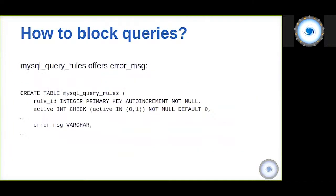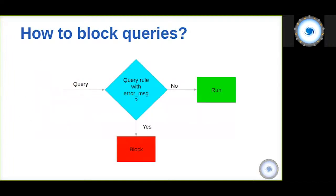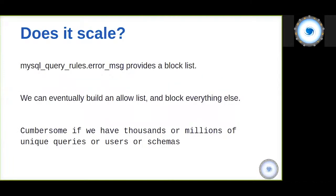Now, the firewall. ProxySQL has always had a way of blocking queries using the error message column in the MySQL query rules table. If the error message is set, the query is rejected. You can configure it as a block list — specifying criteria for blocking — or convert it into an allow list by specifying all allowed queries and adding a catch-all rule at the end that blocks everything else. However, this becomes complicated with many rules.